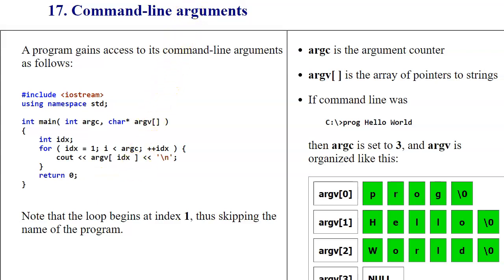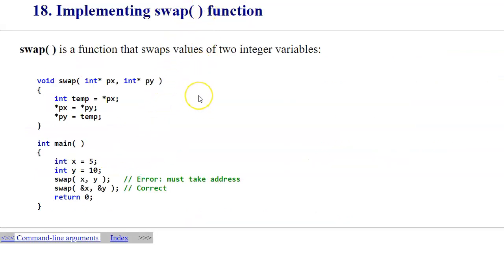The last sample in this handout demonstrates implementation of a swap function - swap of two integers. Two integer variables are initialized, then we call a swap function. The function takes pointers to left and right parameters and creates a temporary variable to implement the swap.